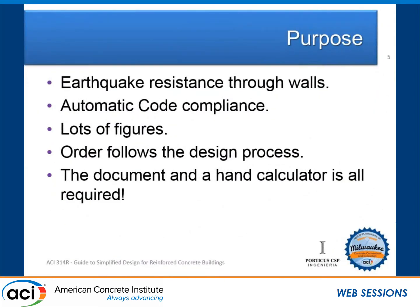For those in earthquake regions, it attains earthquake resistance through a system of concrete walls. It provides automatic code compliance — if you follow the recommendations of the guide, you're fully compliant. One of the beauties is that it now has a lot of figures. For those who follow 318, I strongly recommend looking at the new SP17 in the ACI bookstore, a design handbook companion to 318 with lots of figures too.